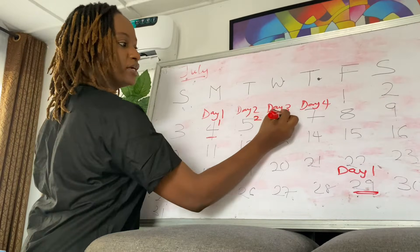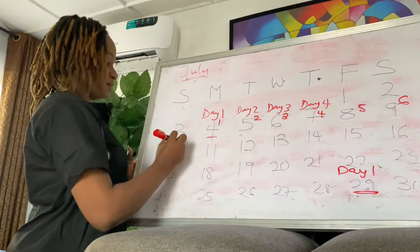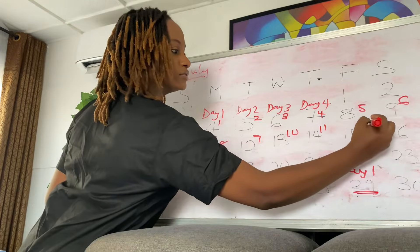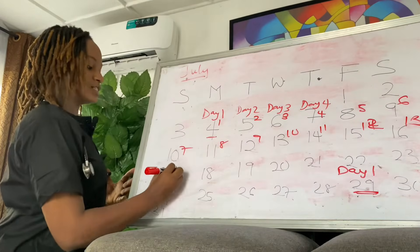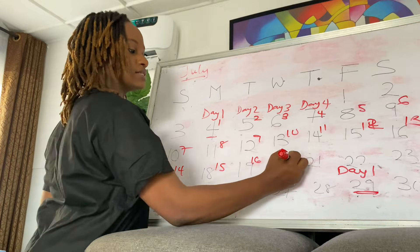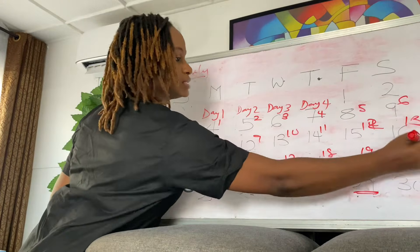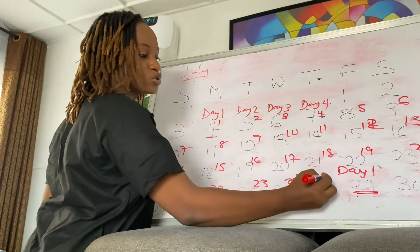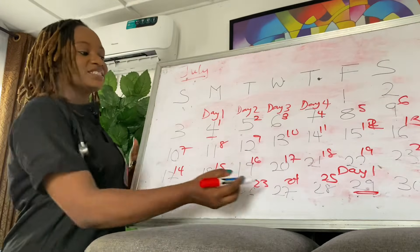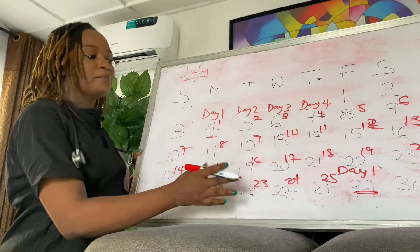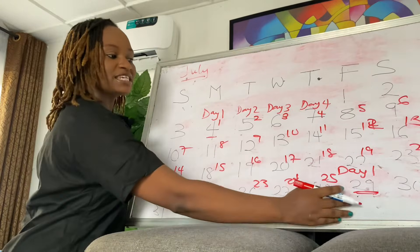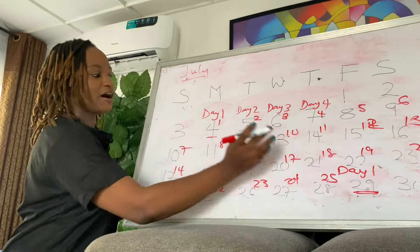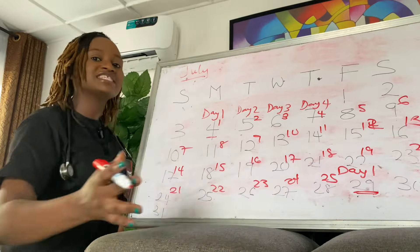So how you will know your cycle length is by counting from day one of the previous cycle to the last day before the next cycle. Counting from the 4th of July to the 28th of July gives us 25 days.